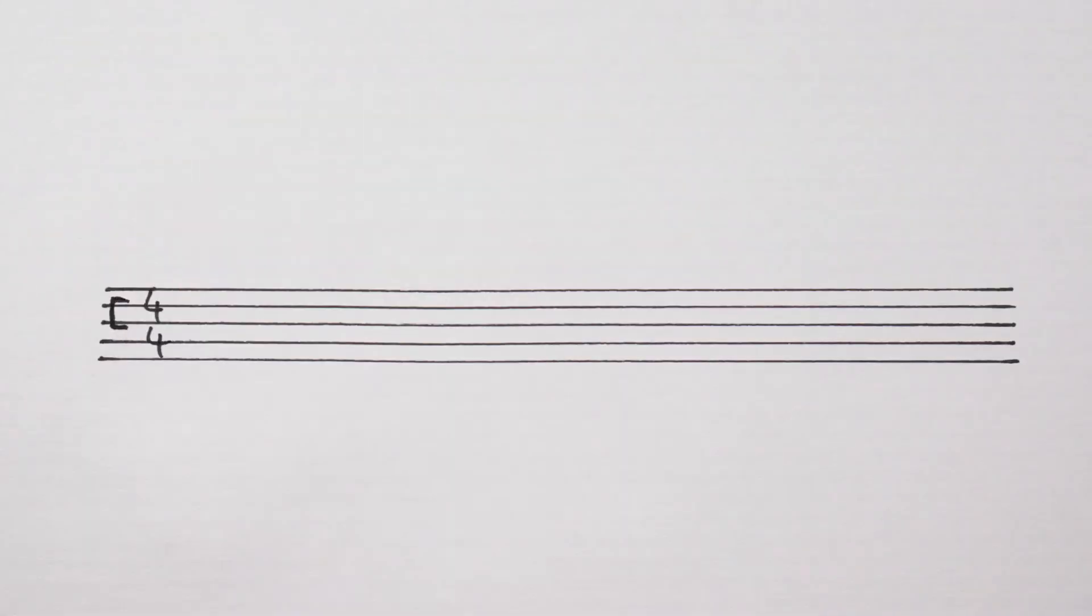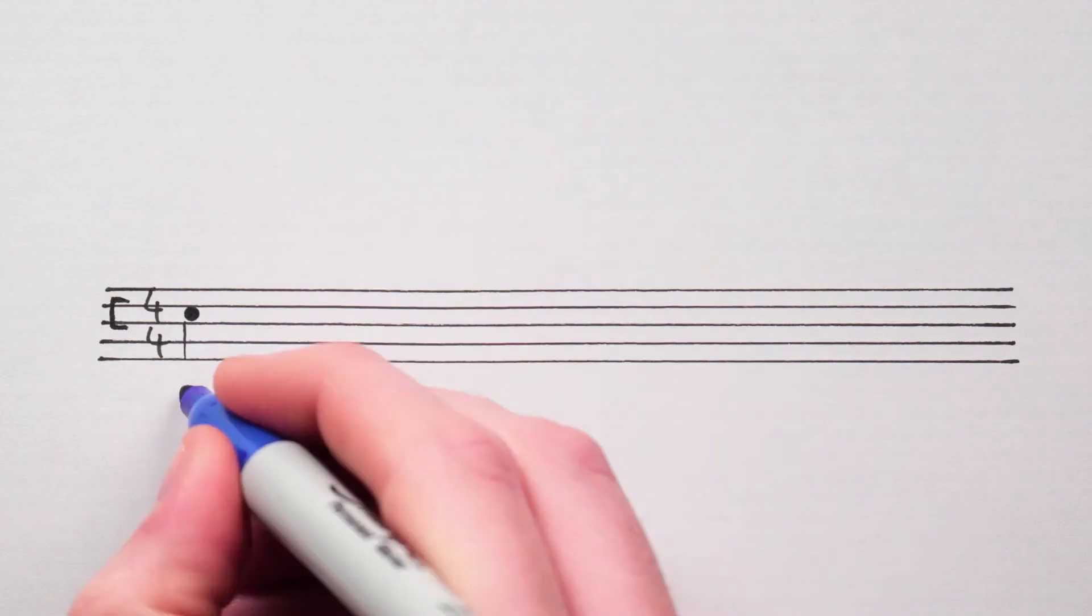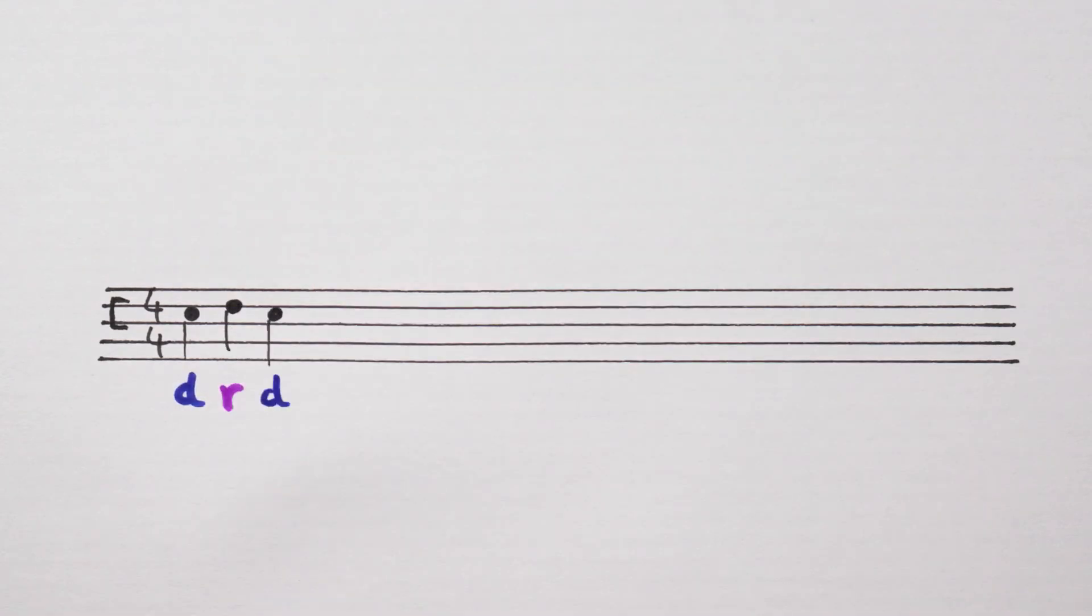So, in staff notation, it would be Do, Re, Do, Re, Do, Do, Do. Remember, Do is on the Do space, given by the Do clef, and Re is a step above Do.